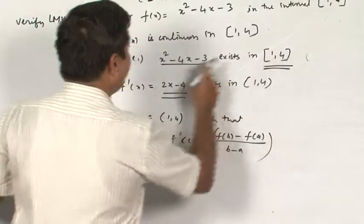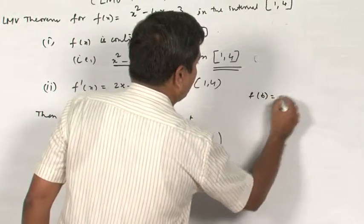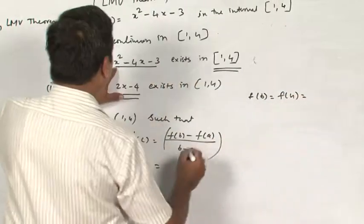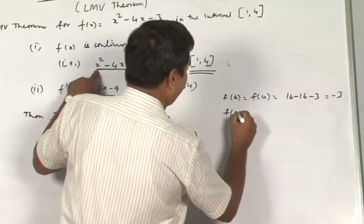f(b) is what? f(b) you have to identify. f(b) is equal to f(4), which is equal to x² minus 4x minus 3. That is 16 minus 16 minus 3, which equals minus 3. f(a)